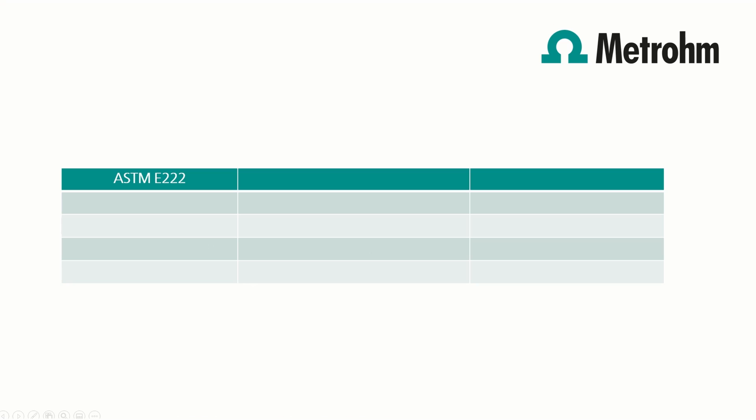There are three titration methods used for the analysis of the hydroxyl number. The original method described in ASTM E222 uses acetic anhydride in pyridine for the acetylation. It is necessary to reflux the sample for an hour and blank determinations are needed. This makes the method time consuming and difficult to automate.